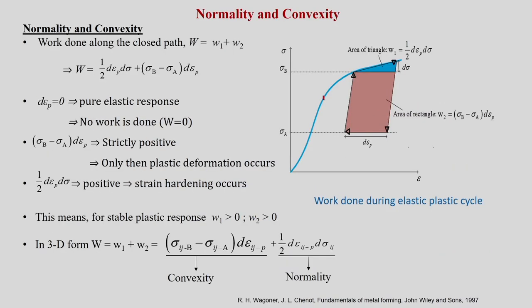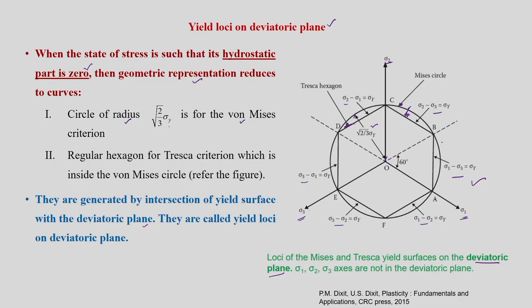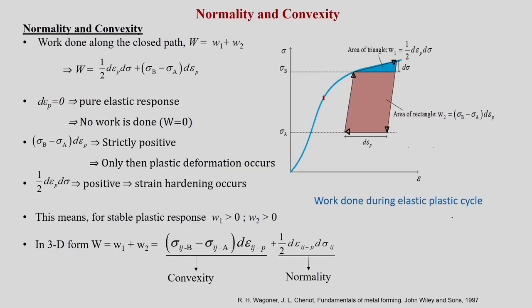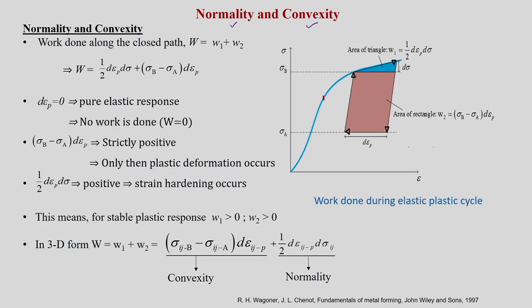These two yield functions are important for isotropic materials. For anisotropic sheets, we will later see other yield functions where the plastic strain ratio r comes into picture. When discussing yield functions, two important concepts are normality and convexity.